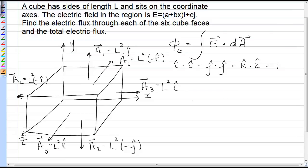Now let's look at the expression for the electric field. The electric field is equal to (a + bx) i-hat plus c j-hat. Now there is a variable in that expression, so you may think you have to integrate.